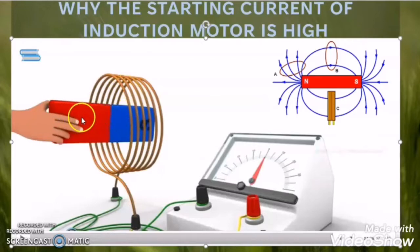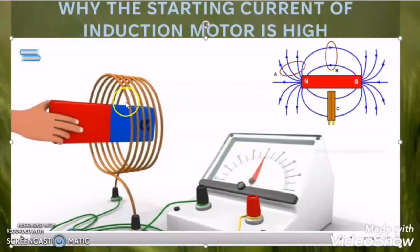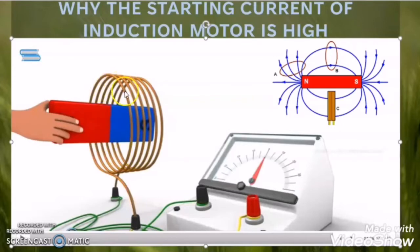But when we hold the magnet without giving any motion with respect to the coil, then the magnetic flux of that magnet is linking with the coil, but there is no change occurring in the magnetic flux linkage with the coil, and due to that there is no deflection in the galvanometer. It means there is no induced EMF and no induced current in the coil. So from this experiment, we can conclude that when there is a change in the magnetic flux linking to the coil, there is induced EMF and induced current in the coil. But when there is no change in the magnetic flux linkage with the coil, there is no induced EMF and no induced current in the coil.